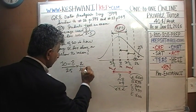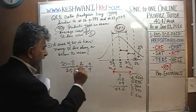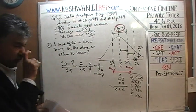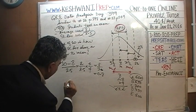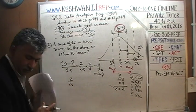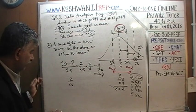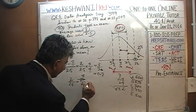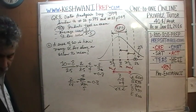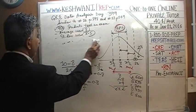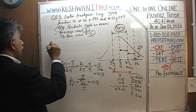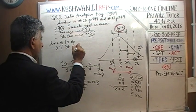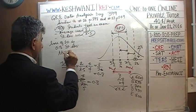We calculate 2 ÷ 2.5. Multiply top and bottom by 4 to get 8 over 10, which is 0.8. Alternatively, multiply top and bottom by 10 to get 20 over 25, which reduces to 4/5 = 0.8. So he scored 0.8 standard deviations above the mean. The score of 10 is 0.8 standard deviations above the mean.